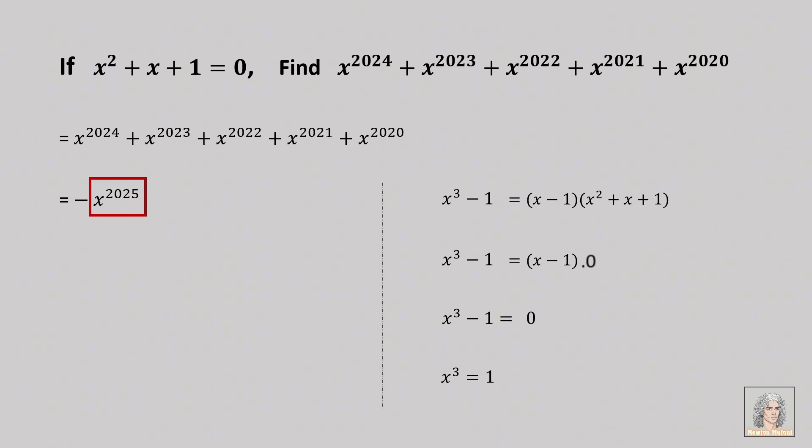2025 is same as 3 times 675, and this product can be written as the power of a power like this. Minus x cubed, and then whole thing to the power 675.